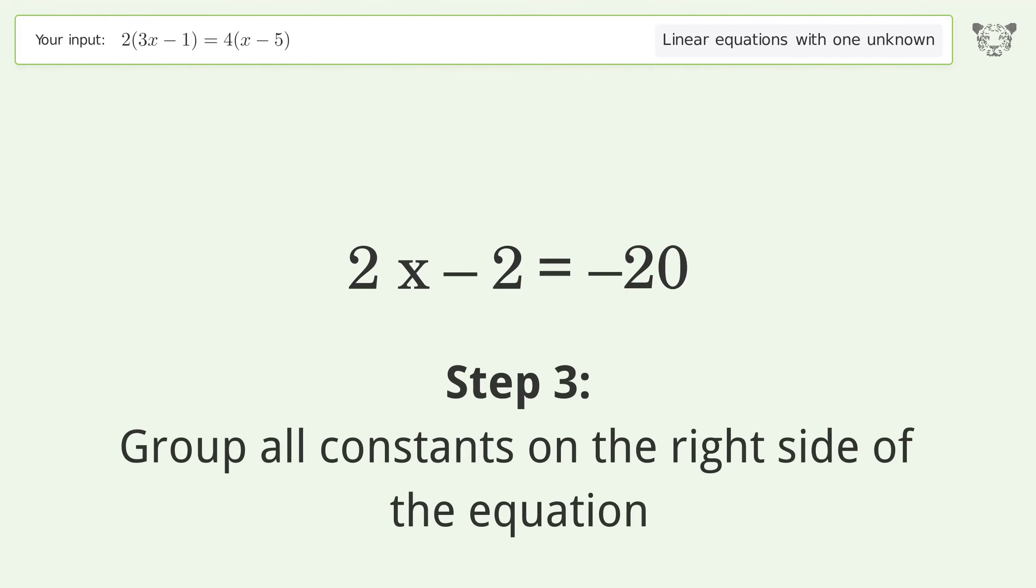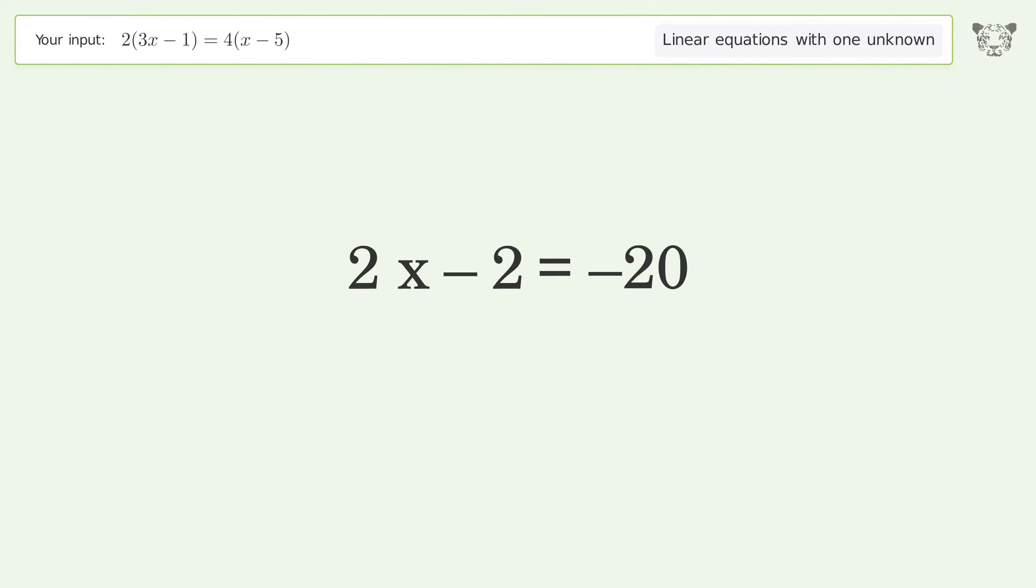Group all constants on the right side of the equation. Add 2 to both sides. Simplify the arithmetic.